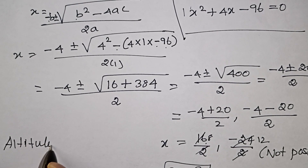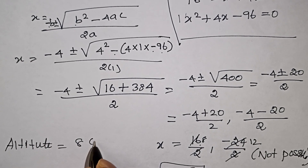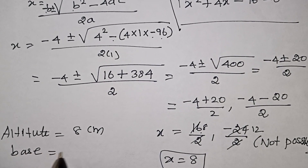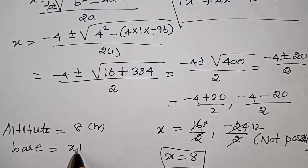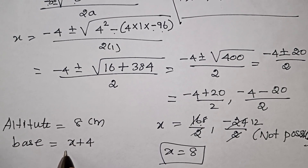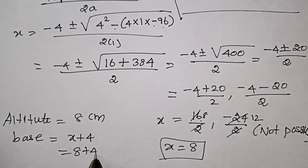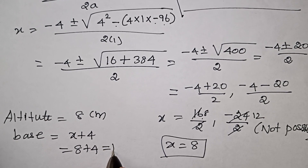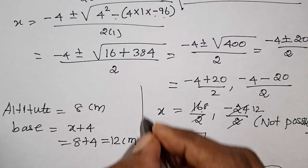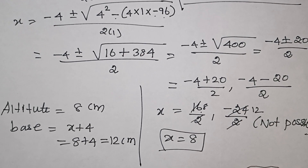Solving: altitude x = (minus 4 + 20) / 2 = 8 cm. So the altitude is equal to 8 cm. The base is x plus 4 = 8 plus 4 = 12 cm. So the altitude is 8 cm and the base is 12 cm.